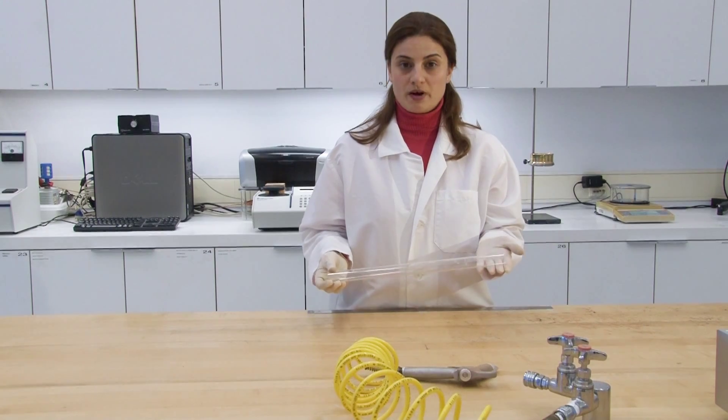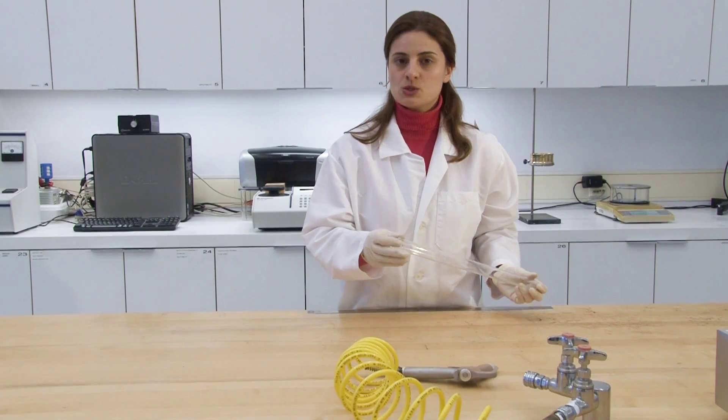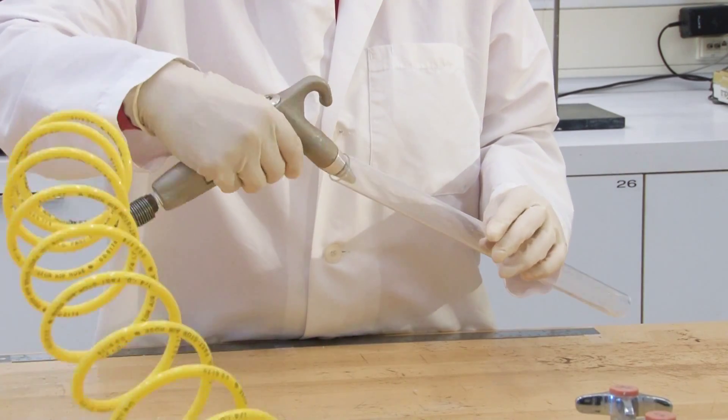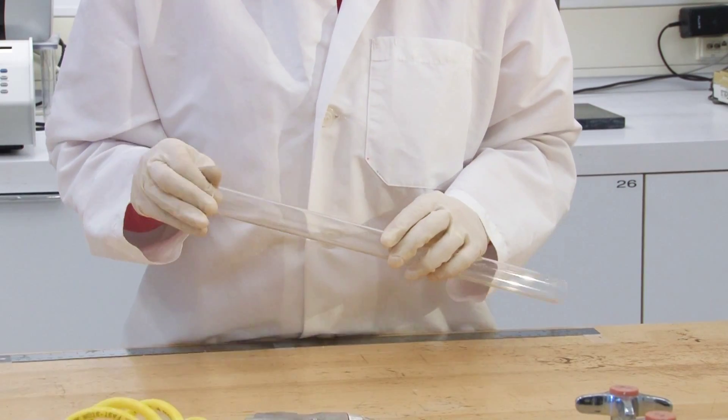Here is the tube after cutting. We have to make sure that there is no residual small pieces inside the tube. So we will clean it up with an air gun and also clean the edges.